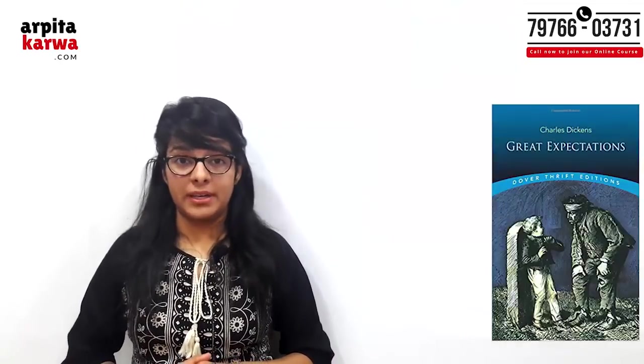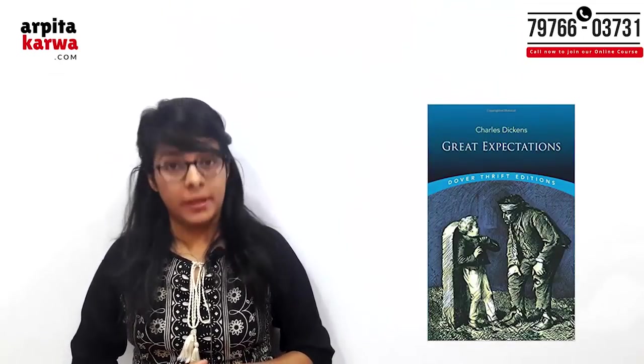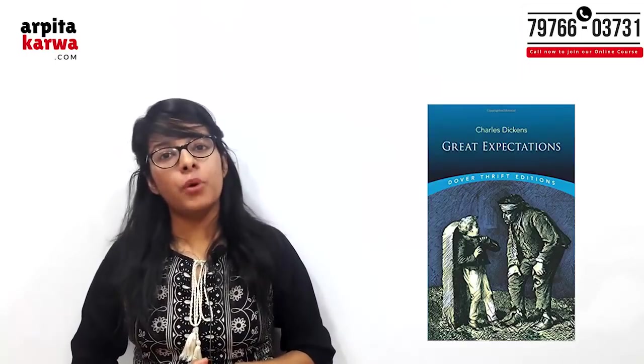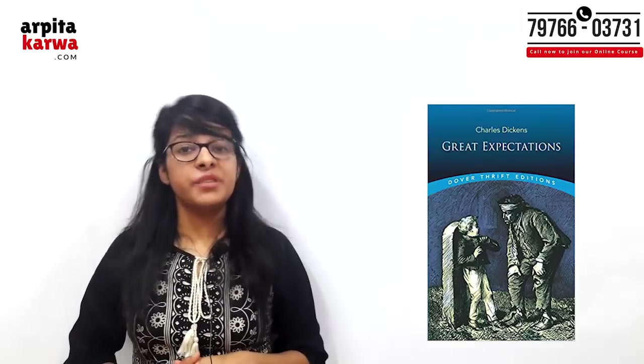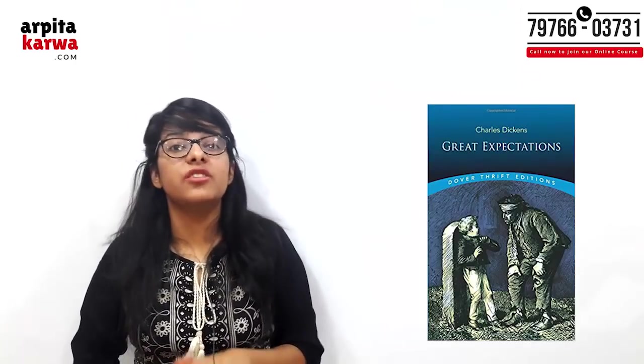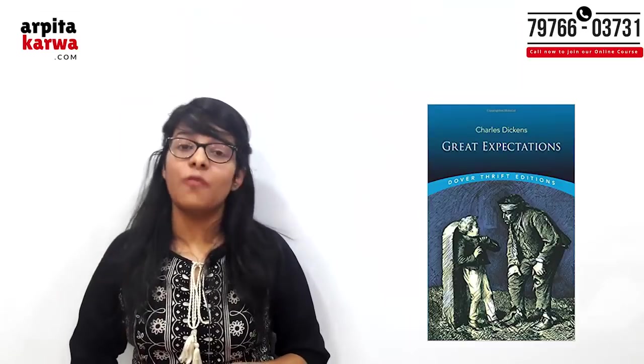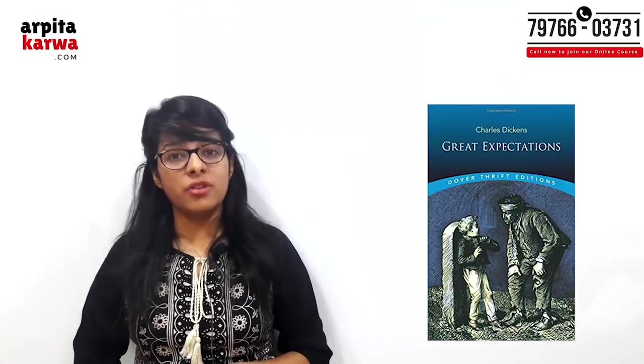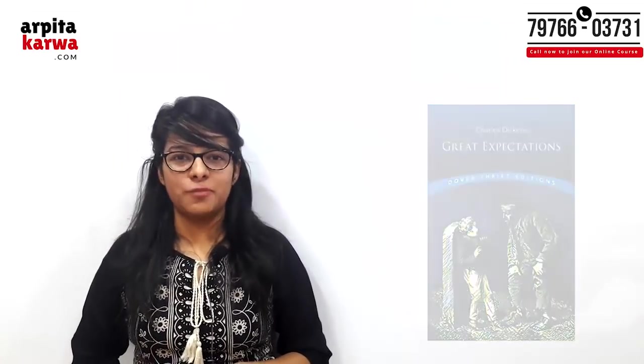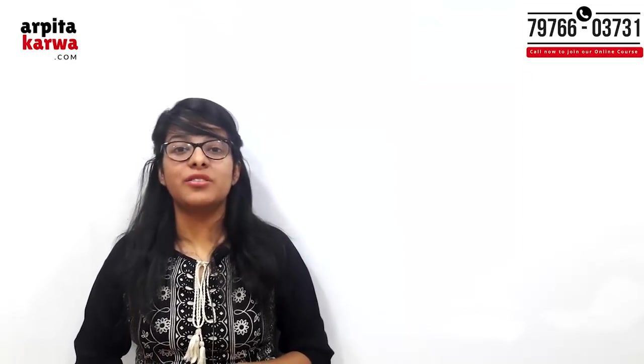The second most important novel by Charles Dickens is Great Expectations. It is a story about Pip and his love for the girl Estella. The novel is important because it has two endings — one original ending by Dickens and another, more pleasant ending given on the request of his friend William Wilkie Collins. Thomas Carlyle referred to this novel as 'Pip nonsense.'